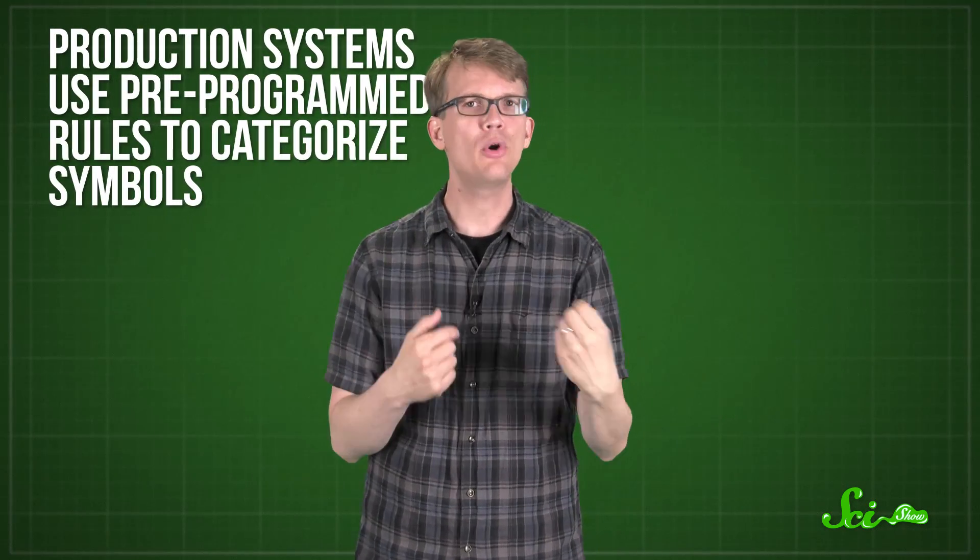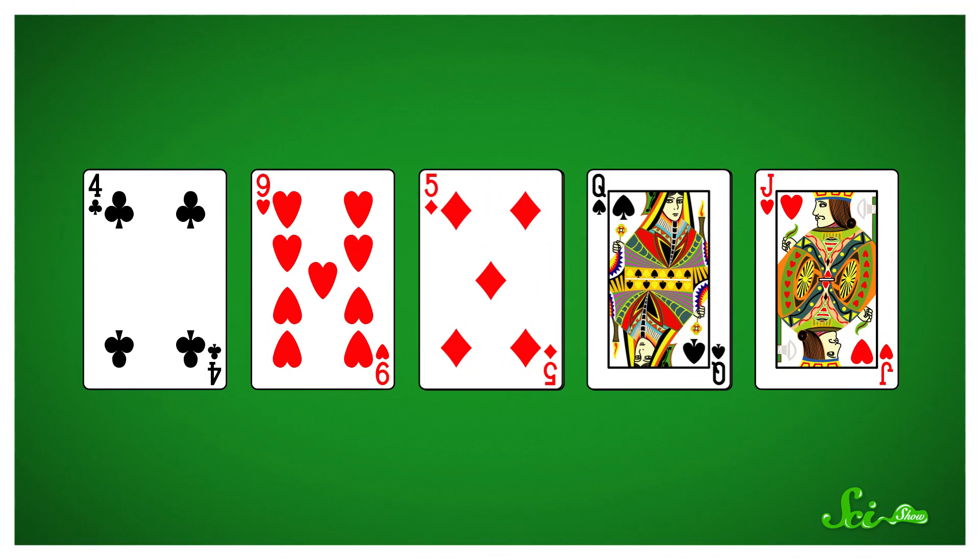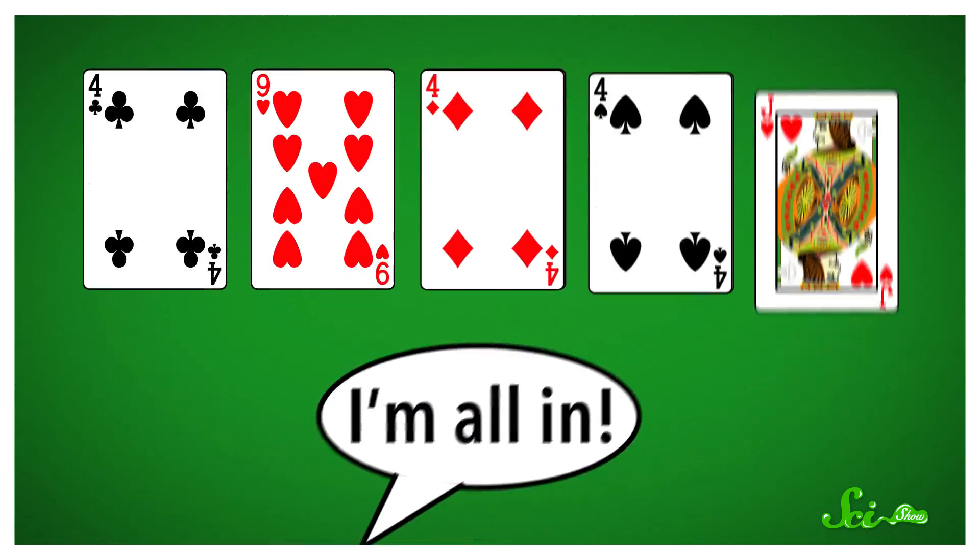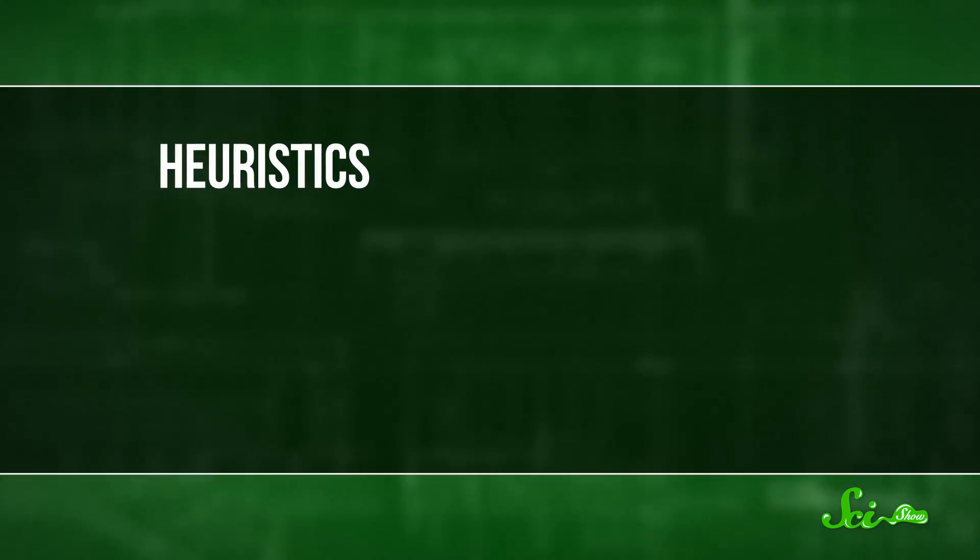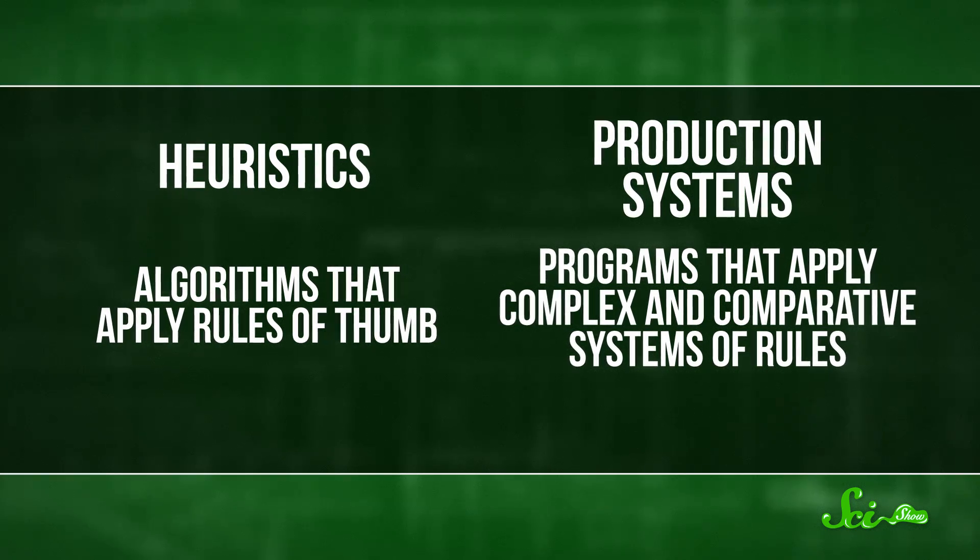Production systems use pre-programmed rules to categorize symbols, like those on a card. Waterman's system sorted cards as more or less valuable, depending on what other cards it already had in its hand. Like on its own, a four of clubs isn't much to write home about, but it has a lot more value if you already have the four of diamonds and the four of spades. The system could then calculate how good its hand was, and whether or not it should stay in or fold out by comparing the value of its hand to its pre-programmed measures of what a good or bad hand was. Heuristics and production systems, algorithms that apply rules of thumb, and programs that apply complex and comparative systems of rules. Put those together, and creating AIs that could play basic board games became a walk in the park.